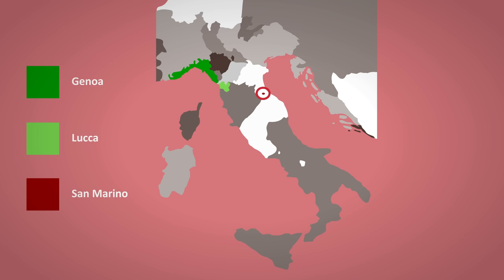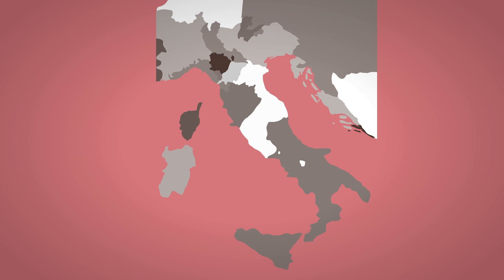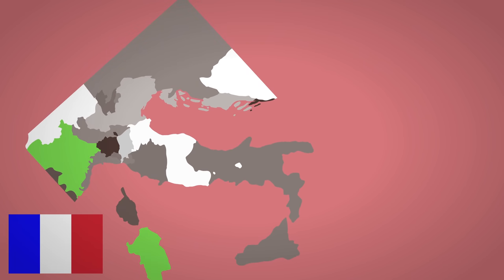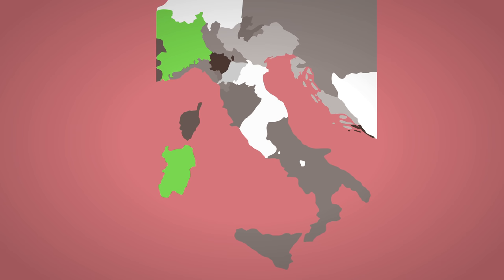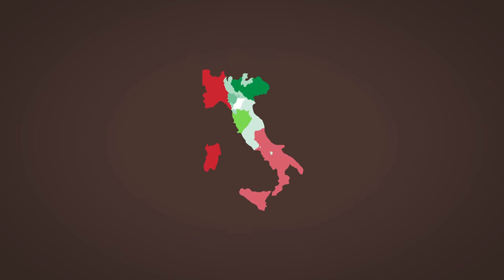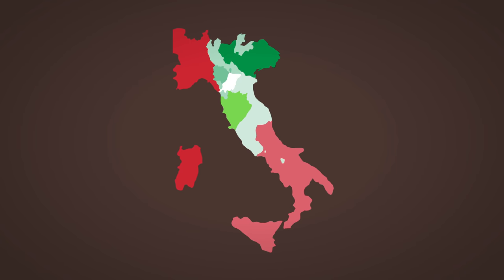San Marino was independent and remains so until today. And then there was the Kingdom of Piedmont Sardinia. They were largely independent although leaning heavily towards France. They weren't the most powerful country at the time and focused largely on industry. Modern day Italy has a rich industrialized north and a poorer south — some of that started with Piedmont Sardinia, which slowly created a powerful economy. These are all the major players in Italy in 1796.